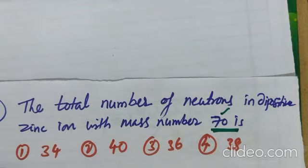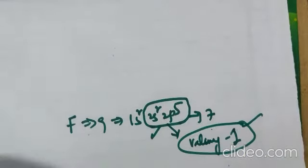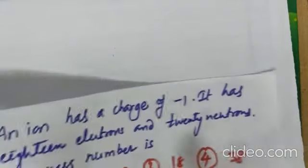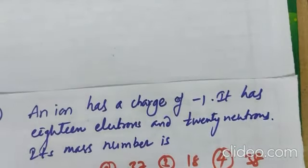So, the neutrons, how many? A minus Z. 70 minus 30. So, answer is how much? 40. This is the second question. And, third one.